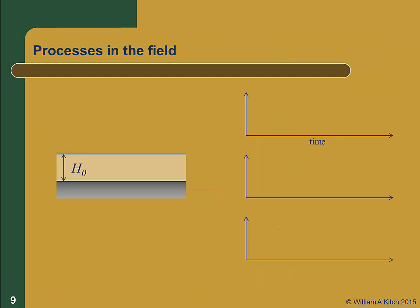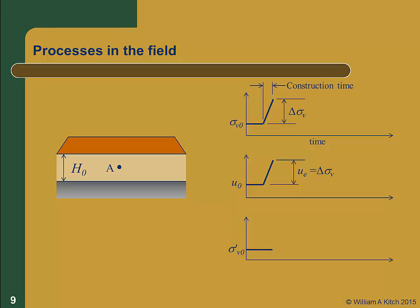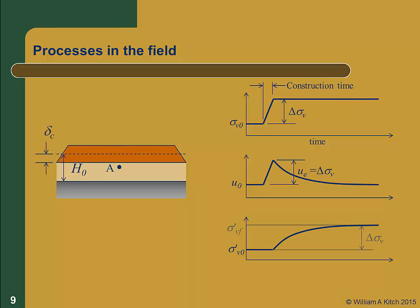In the field, the process is very similar. We have a compressible layer with an initial thickness, h-naught. At some point A in the soil, there is an initial vertical stress, sigma-v-naught, pore pressure, u-naught, and effective stress, sigma-v-naught prime. In the field, it takes time to construct the fill, and therefore the load is applied over some period of time rather than instantaneously. Initially, the induced stress, delta-sigma-v, all goes to excess pore pressure, and there is no change in effective stress. After the fill is placed, the excess pore pressure starts to dissipate, the effective vertical stress increases, and the fill settles. The total consolidation settlement is delta-sub-c.